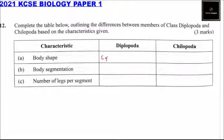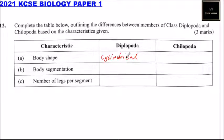For Diplopoda, in terms of body shape, it is cylindrical. For Chilopoda, the body shape is flattened.